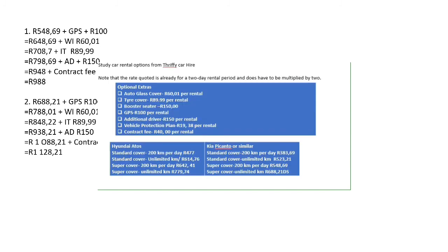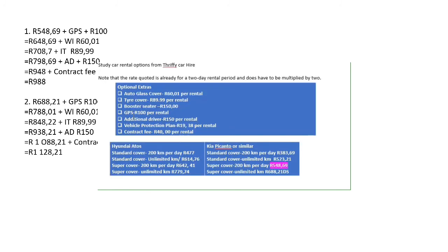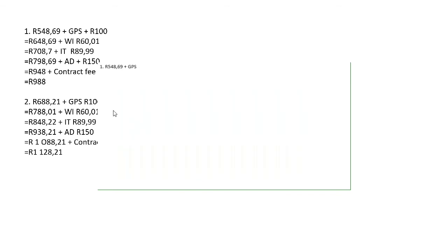Since Mr. Sitolo wants super cover and a Kia Picanto, we look at the corresponding box. He wants 200 kilometers per day, so he will be paying 538 rand 69 cents. The rate is already for a two-day rental so we don't multiply by two. We add GPS: 100 rands, which equals 638 rands 69 cents.